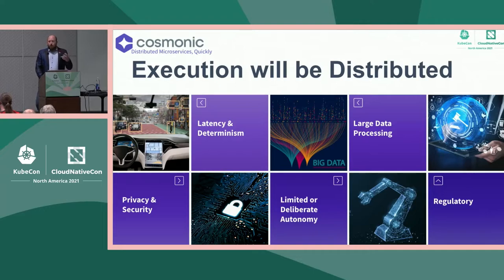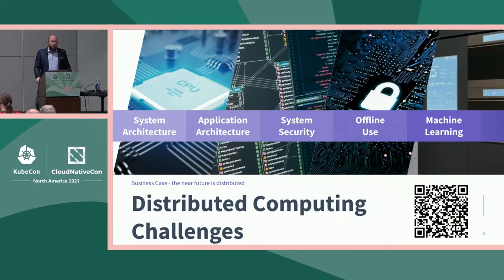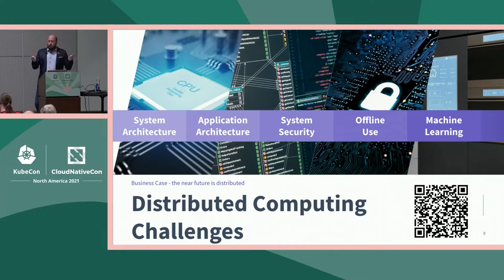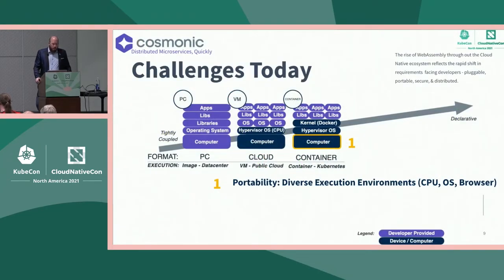If we accept that the future of applications is distributed, we also accept some significant problems. The first is a diverse set of system architectures. The second is that application architectures themselves will be different — peer-to-peer, device-to-device that don't even transit the public cloud. Third is system security — how do we reuse code and deploy it everywhere and keep it safe? And offline use and machine learning. Let's walk through the three key challenges in today's computing environment that are driving the rise of WebAssembly.